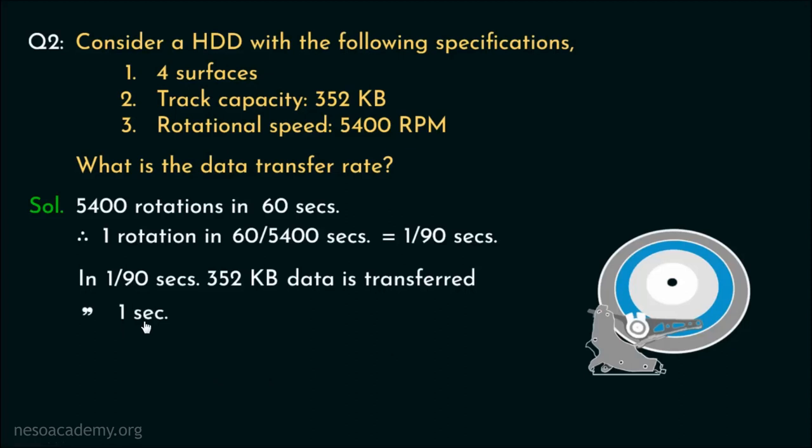So, in 1 second, 90 times 352 KB of data is transferred. Now, this is the data transfer rate for one surface. And in the specs, 4 surfaces are specified. Therefore, the total data transfer rate will be 4, that is the number of surfaces, multiplied by the data transfer rate of one surface, that is, 4 times 90 times 352 KB per second.